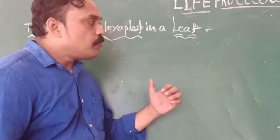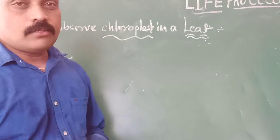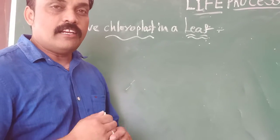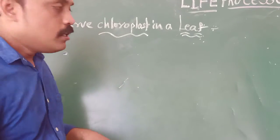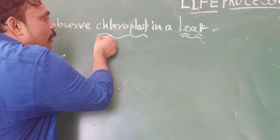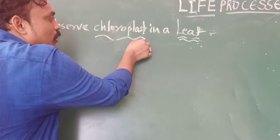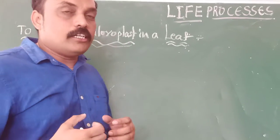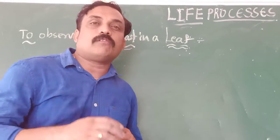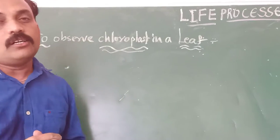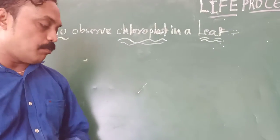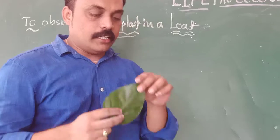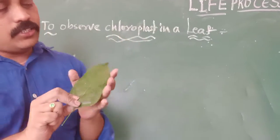Good afternoon. Now we are going to discuss about the presence of chloroplasts in a leaf — in a section of leaf. We have to observe the chloroplasts, the number of chloroplasts, and in which region the number of chloroplasts are more. We are going to discuss about that topic.